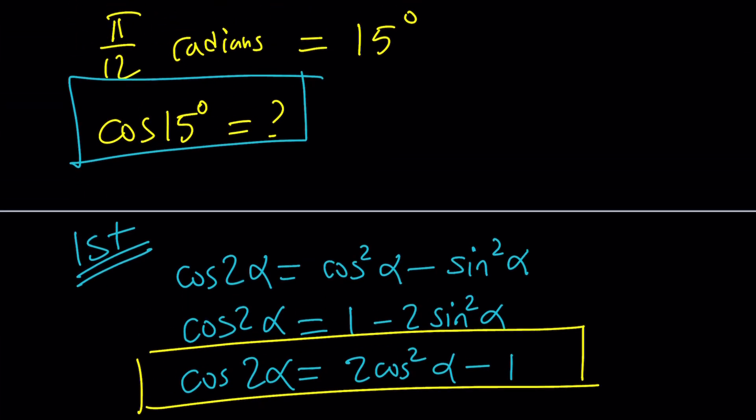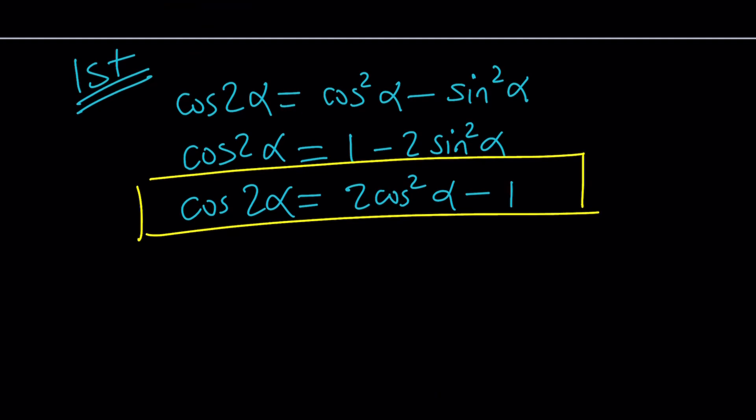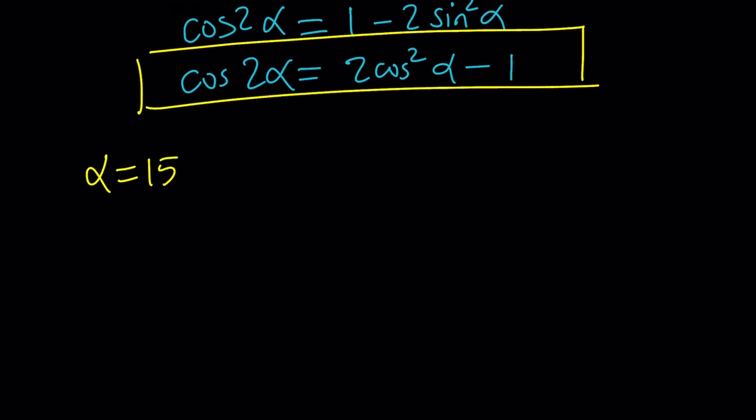So I do need cosine 15 degrees, and I want to associate it with the cosine of 2 times 15 degrees, which is 30 degrees. So in other words, in this formula, if you set α equal to 15 degrees, then you're going to get cosine of 2 times 15, which is 30. And this is 2cos²15 minus 1.